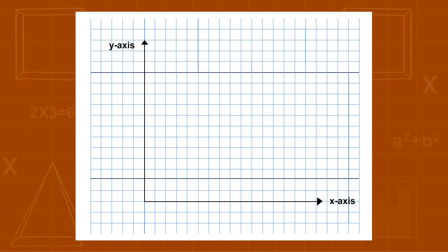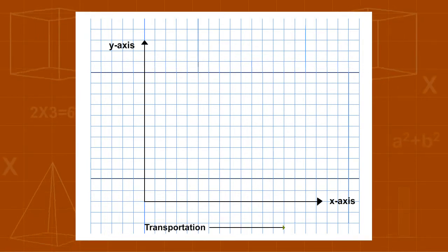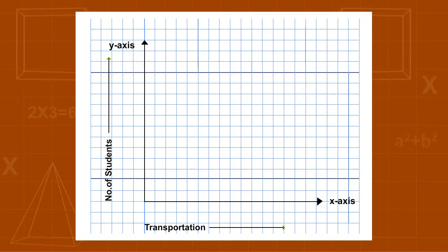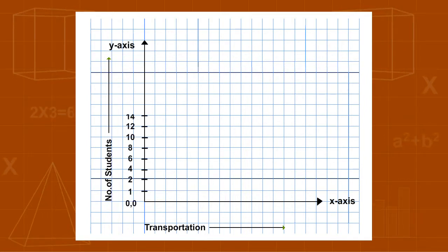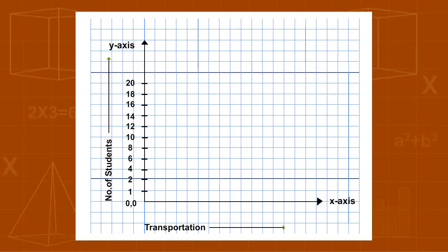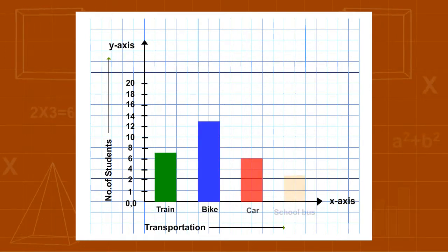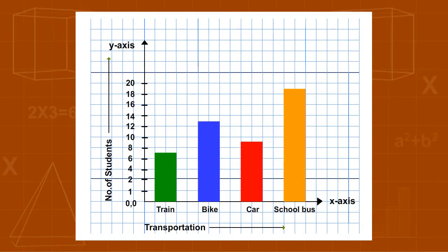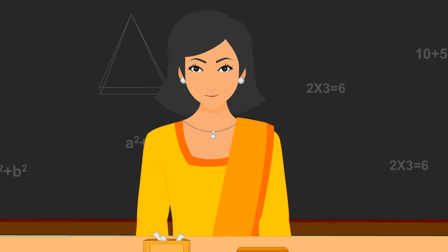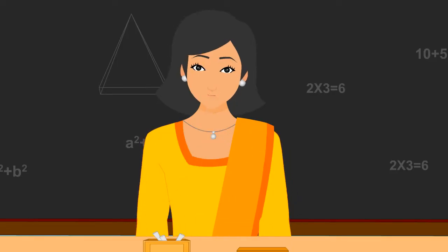We will learn how to draw the bar graph. Write the title of the graph. Label the axis. Use appropriate numerical scale with equal intervals. Use equal width bars. Keep equal space between the bars. So, children, these are the steps by which we can easily draw any bar graph.